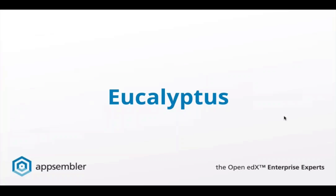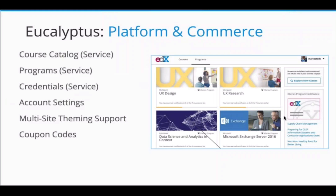Eucalyptus is just around the corner — it's scheduled to be released mid-August. There's a lot of new things coming, and in September we're going to do a deep dive once it's been officially released. But I just want to give you a sneak peek of what's coming. One of the things they've done is taken the Open edX platform — which is very large with a lot of moving parts — and started moving some of those parts out as separate services. There's now a course catalog service, a program service, and a credential service. This allows you to integrate with these services from other systems you might be using.